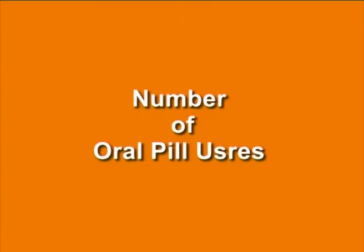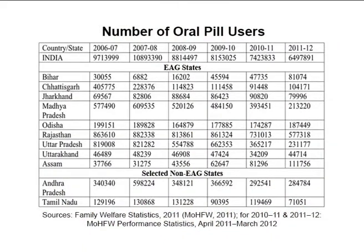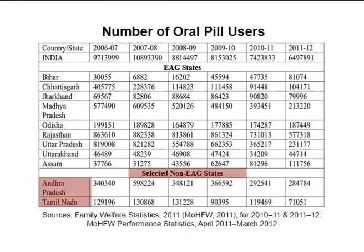Number of oral pill users: Table 10 on your screen shows that there has been a drop in the acceptance of oral pill users in the country, especially after 2007–08. A similar trend has been observed in the EAG states of UP, Madhya Pradesh and Rajasthan. However, Bihar has been an outlier, showing an increase in the acceptance of this method. In the non-EAG states too, the acceptance of this method has declined, especially after 2008.